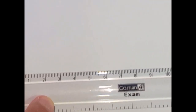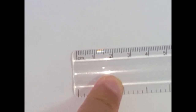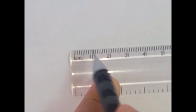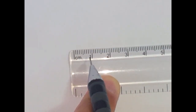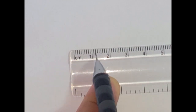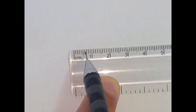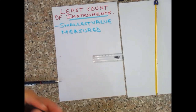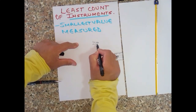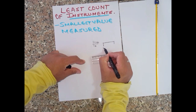If you look closely and zoom in more, this particular scale can actually measure even less than one centimeter. One centimeter is marked here, but the scale can measure less than that. If you look carefully, one centimeter is divided into 10 parts: one, two, three, four, five, six, seven, eight, nine, and ten parts.